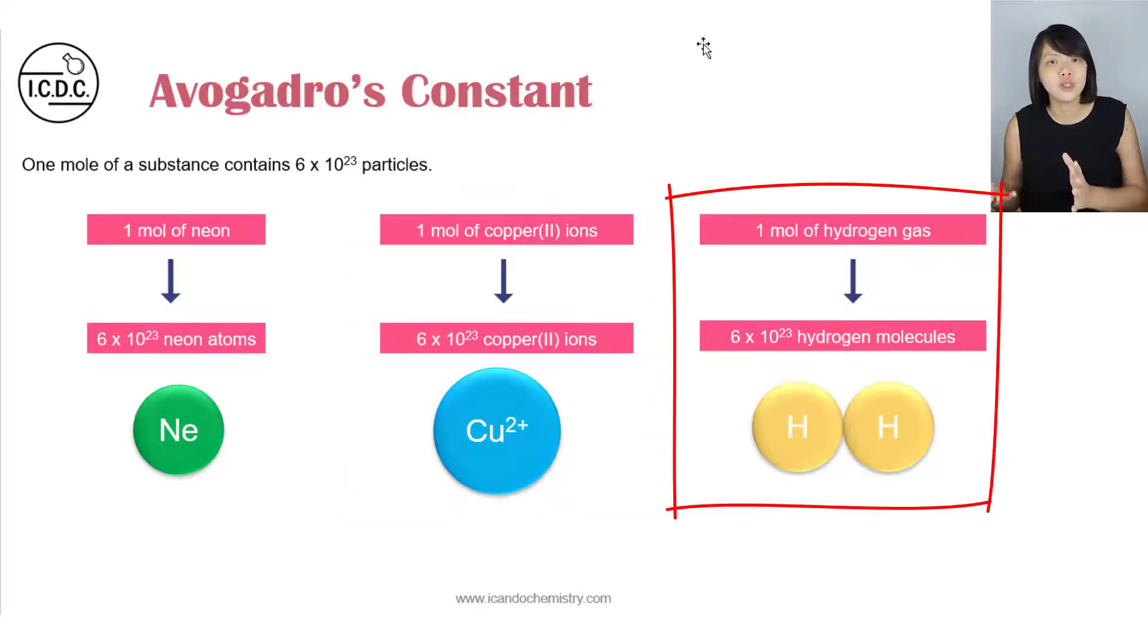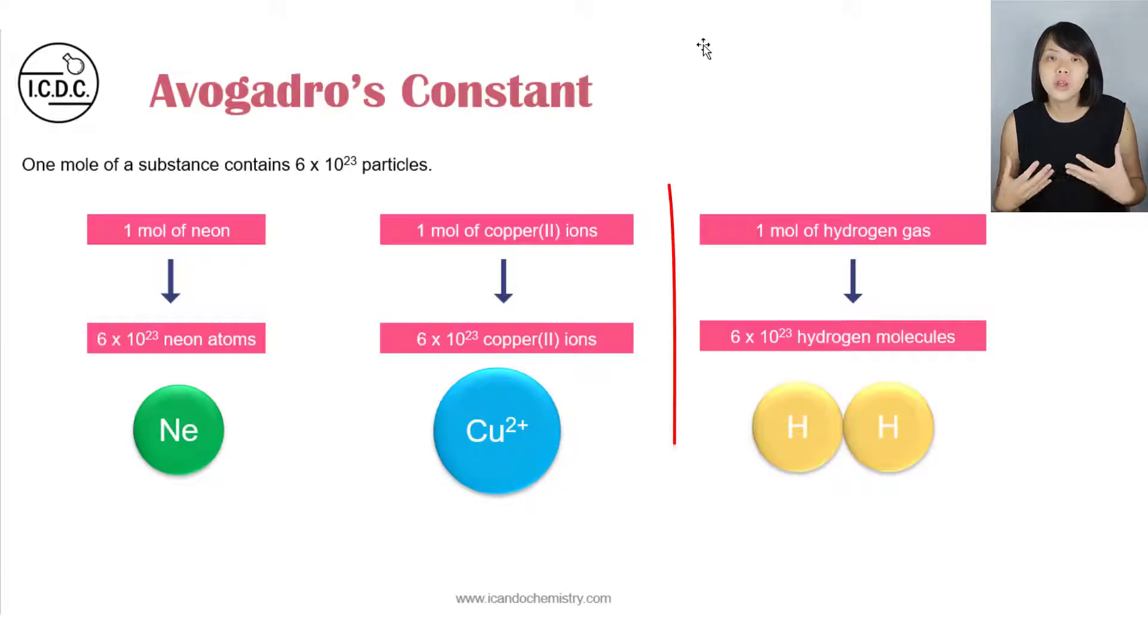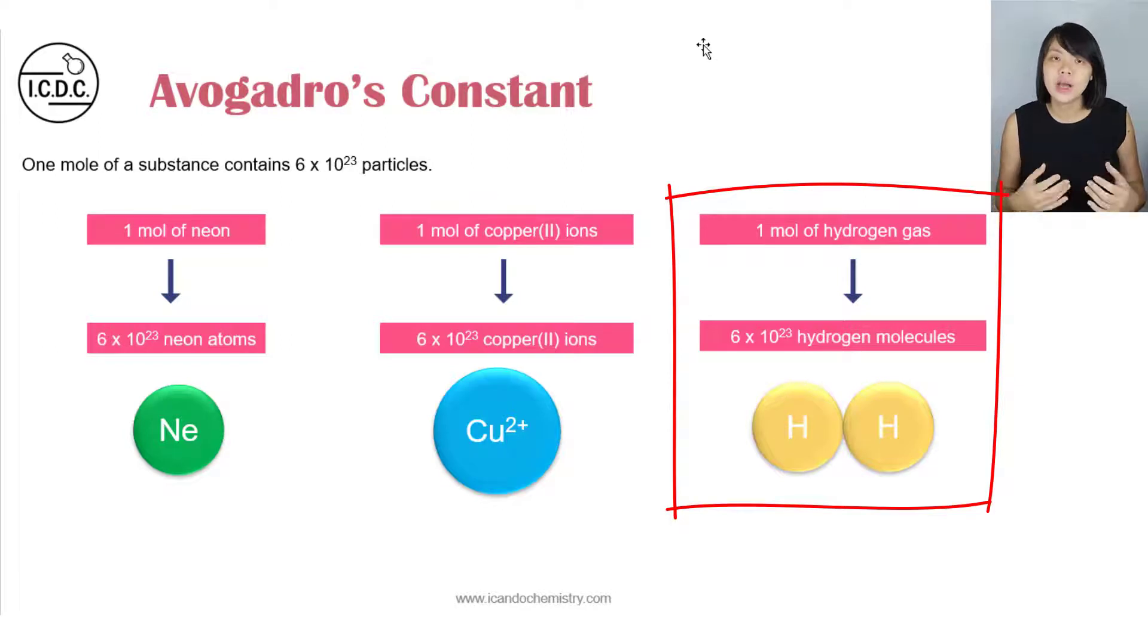What about 1 mole of hydrogen gas? We know that hydrogen, it only has 1 valence electron. So hydrogen is not stable on its own as an atom. So it will need to form a molecule with another hydrogen to attain the stable noble gas electronic configuration. So when we talk about hydrogen gas, we are actually referring to hydrogen molecules as the particles. So we got 6 times 10 power 23 hydrogen molecules in 1 mole of hydrogen gas.